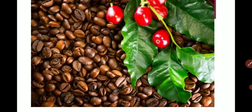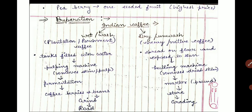These are the seeds of the coffee cherry — we call them coffee beans. If a cherry is one-seeded, we call it a peaberry. The market value of the peaberry is high. Now about its preparation: Indian coffee can be prepared by two methods — the wet/wash method and the dry method.